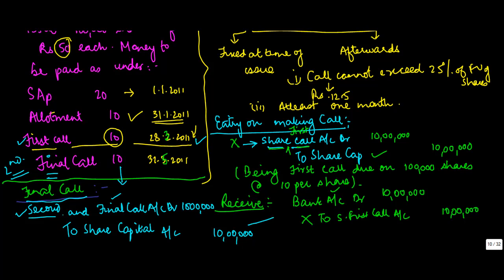And when you receive the money, you debit the bank account and credit the second and final call account, just like the one that you did here. Just the account nomenclature will change. So these are the accounting entries which are done for call money.